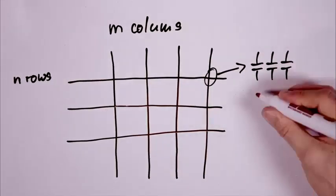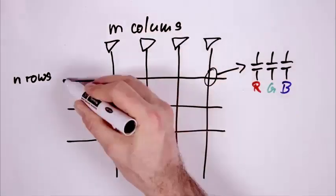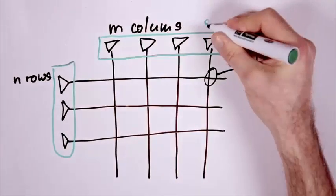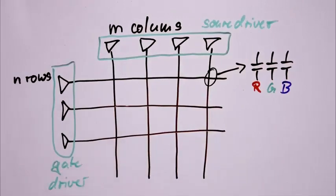Each display is an array of m columns times n rows. The data lines connect to each subpixel column-wise, while the gate lines connect in rows to the gates of the TFTs.